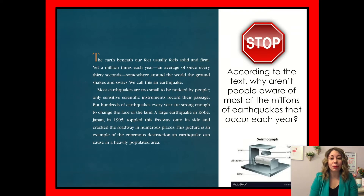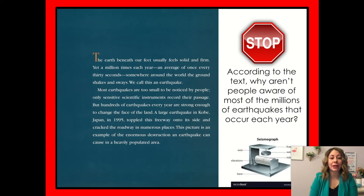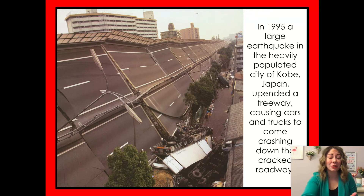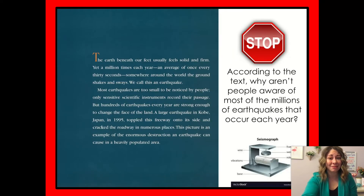The text reads: 'The earth beneath our feet usually feels solid and firm. Yet a million times a year — an average of once every 30 seconds somewhere around the world — the ground shakes and sways. We call this an earthquake. Most earthquakes are too small to be noticed by people. Only sensitive scientific instruments record their passage. But hundreds of earthquakes every year are strong enough to change the face of the land.' According to the text, why aren't people aware of most of the millions of earthquakes that occur each year? Let's find some text evidence for that.